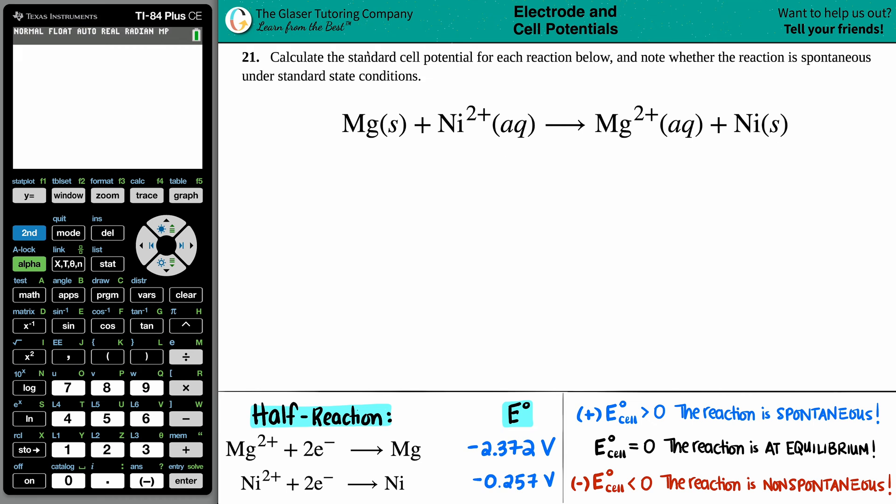Number 21. Calculate the standard cell potential for each reaction below and note whether the reaction is spontaneous under standard state conditions. So we have our equation right here. We have magnesium solid plus nickel 2 plus aqueous yields magnesium 2 plus aqueous plus nickel solid.